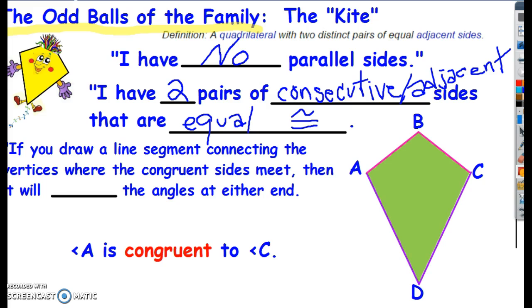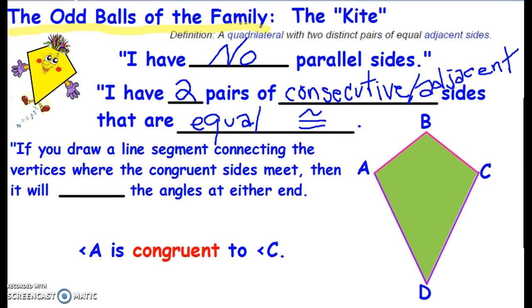Here are the second pair. So we have AB is congruent to BC and AD is congruent to CD. Okay, so that's what that means.